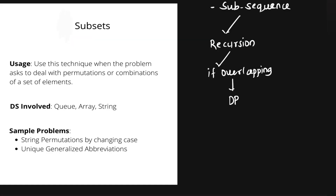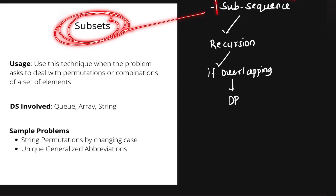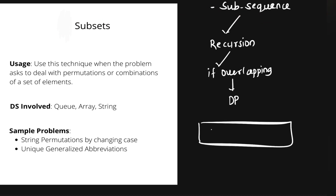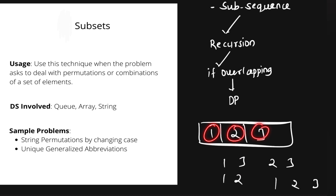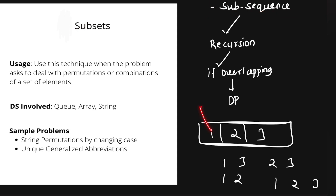The next algorithm is subsets, which depends on the concept of subsequences. Given an array like [1, 2, 3], a subsequence can be [1,3], [1,2], [2,3], [1], [2], or [3], as long as the relative order is maintained — elements can be deleted but the order cannot be changed. For every element we have two choices: pick it or don't pick it. This calls for recursion to explore all possible choices.